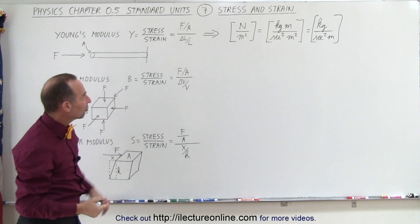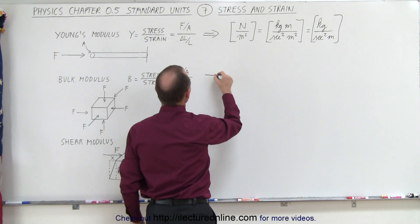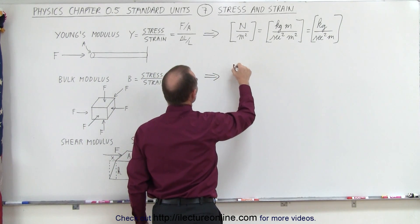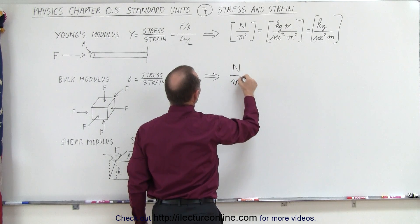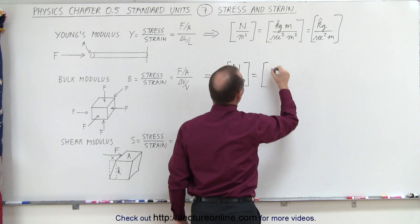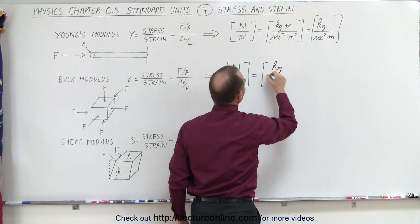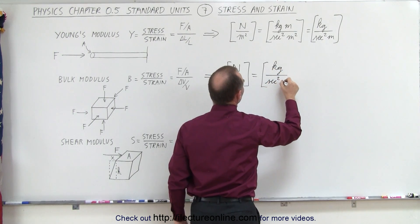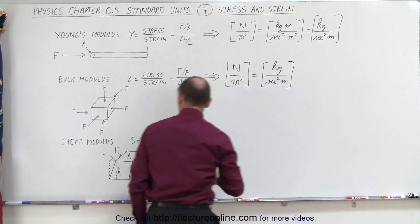Now for bulk modulus, we get the same thing. It's force divided by area, so this will again be Newtons divided by square meters. That will then simplify again to the units of pressure of kilograms per second squared times meters.